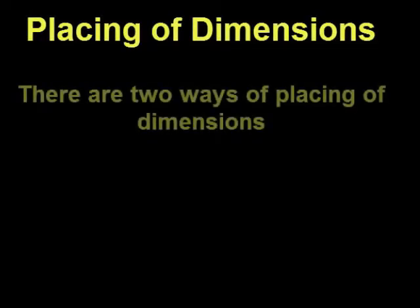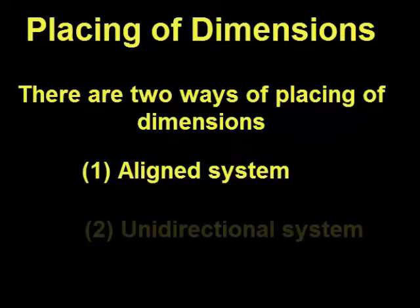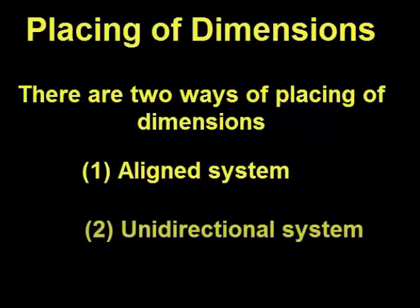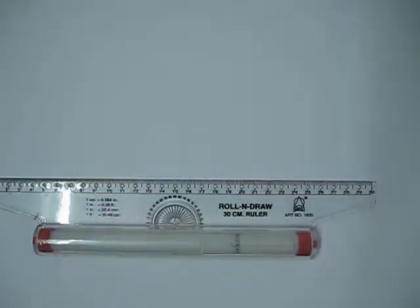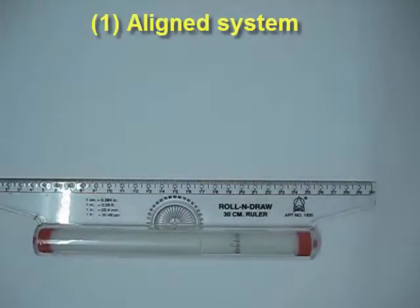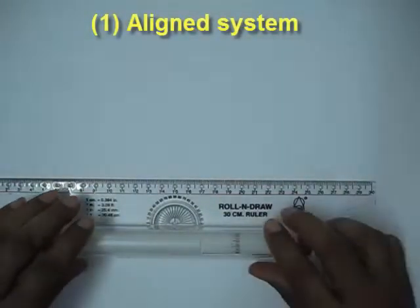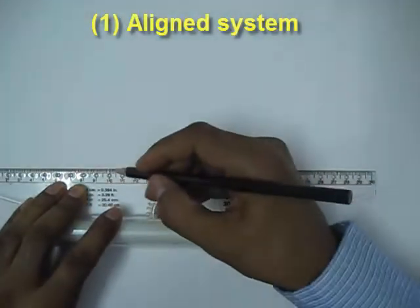Now we come to the placing of dimensions. There are two types of placing of dimensions: the first one is called the aligned system and the second one is the unidirectional system. First I would like to show you the aligned system, and I will draw a simple drawing and then do the dimensioning based on the aligned system.